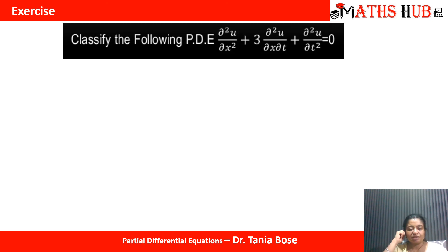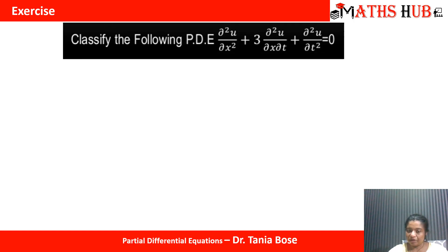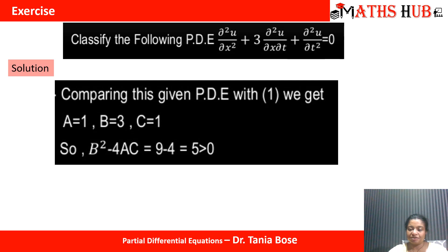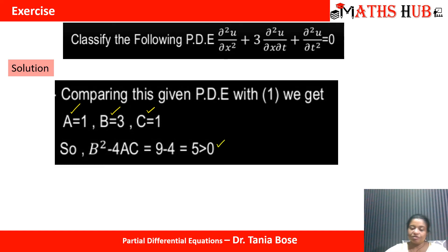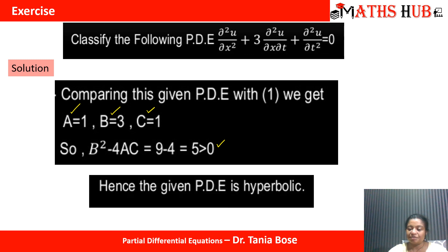The next question: classify the PDE ∂²u/∂x² + 3·∂²u/∂x∂t + ∂²u/∂t² = 0. Comparing with the standard equation gives a = 1, b = 3, and c = 1. Computing b² − 4ac gives 9 − 4 = 5, which is greater than 0, so this PDE is hyperbolic in nature.